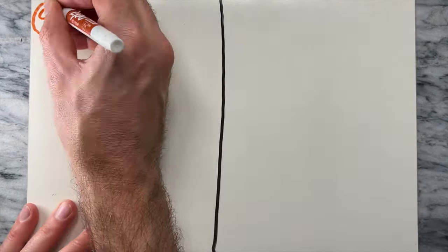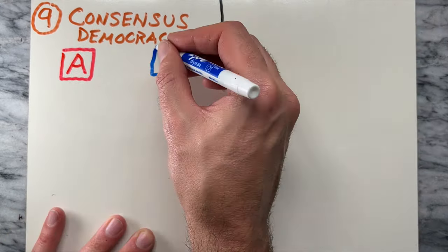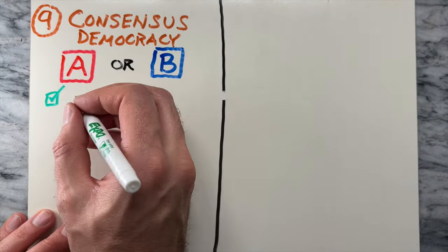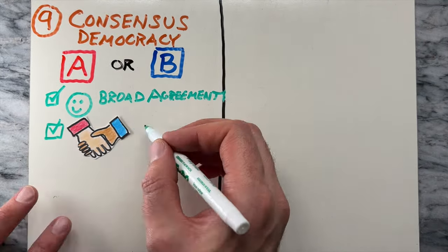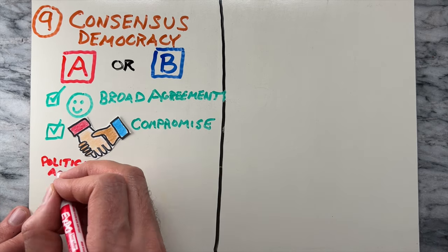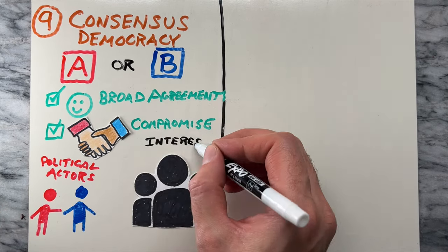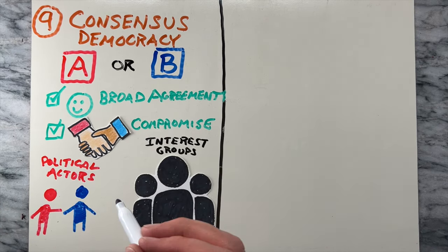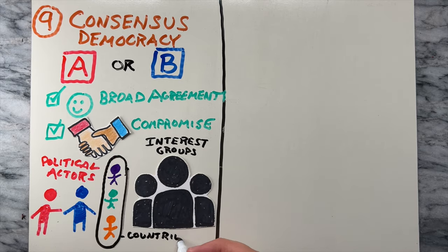After that is consensus democracy. In consensus democracies, decision-making aims to achieve broad agreement and compromise among various political actors and interest groups. This approach is common in countries with diverse populations.